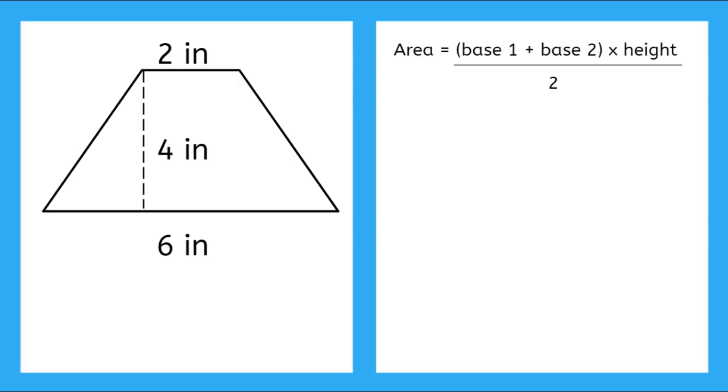So now I have area is equal to base one plus base two times the height all over two. Now let's find the area for this trapezoid using the formula we derived that says area is equal to base one plus base two times the height all over two. So we can see here that we have two bases, one down here measuring at six inches, and one up here measuring at two inches. And then we have our height right here coming in at our right angle.